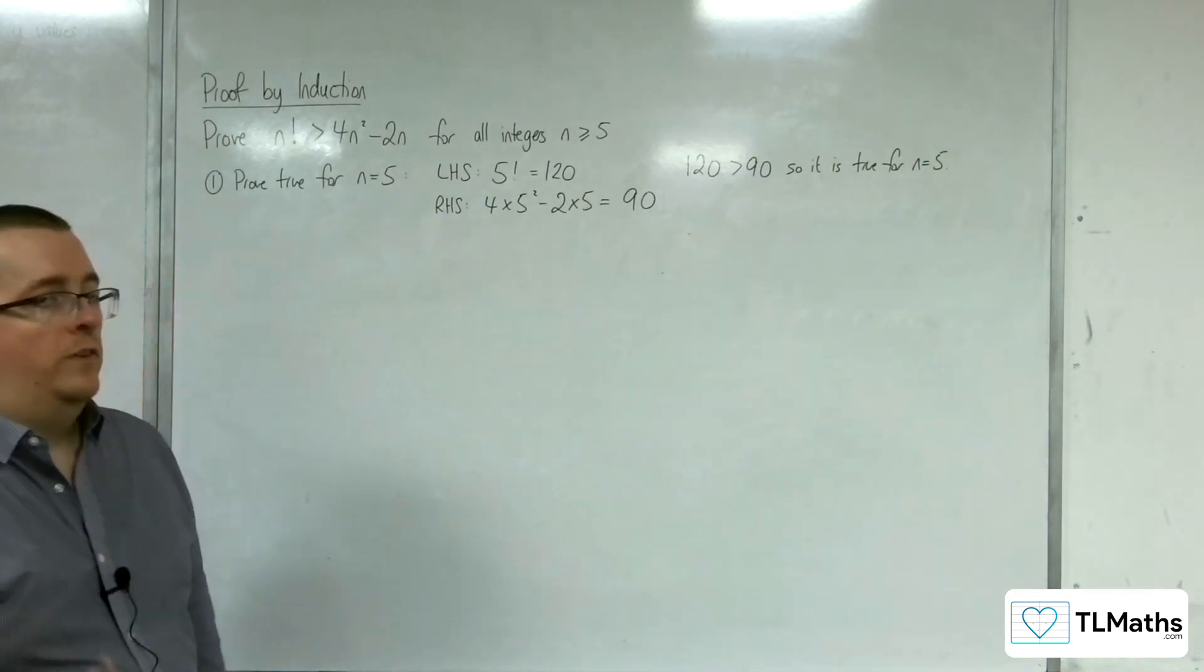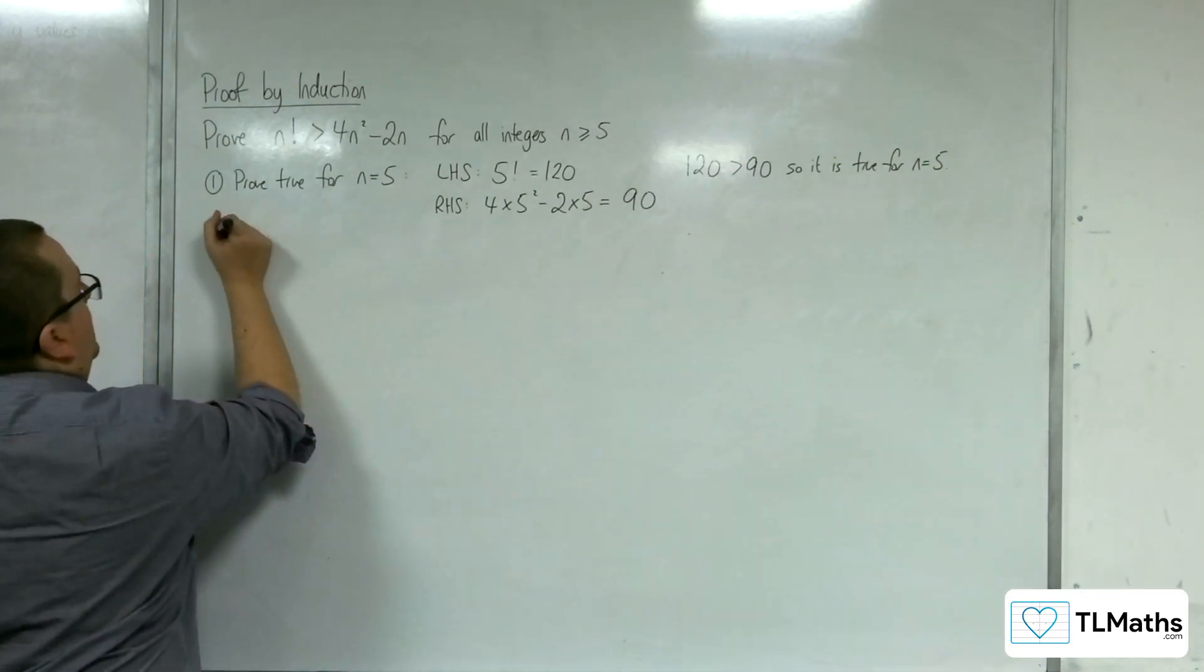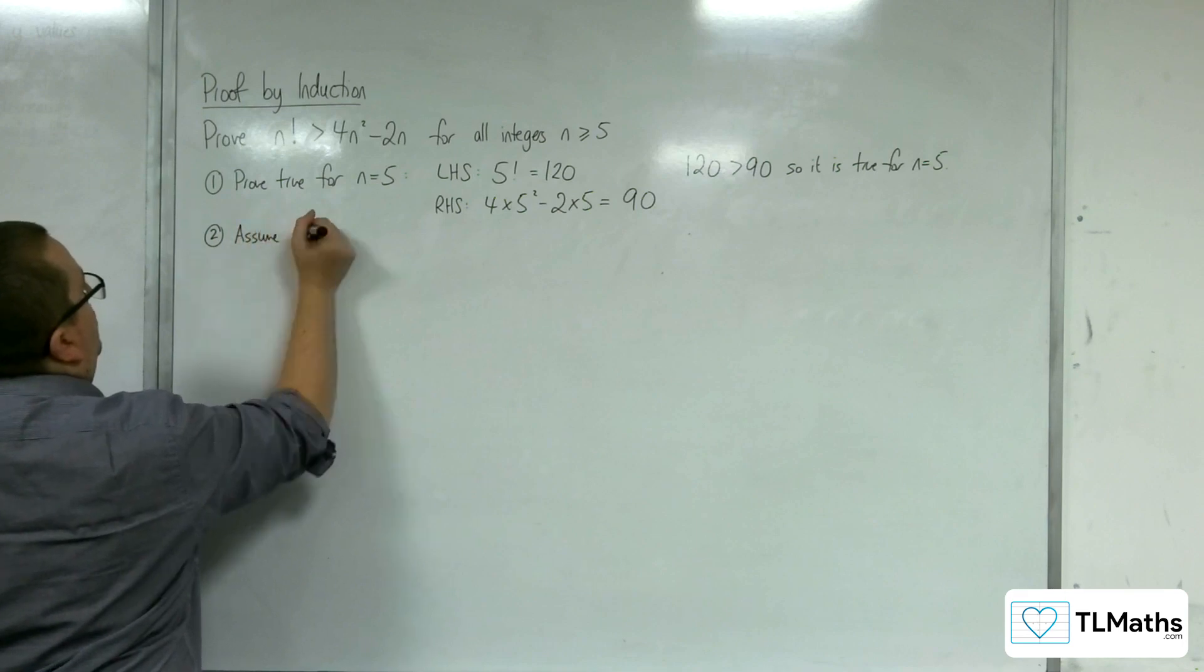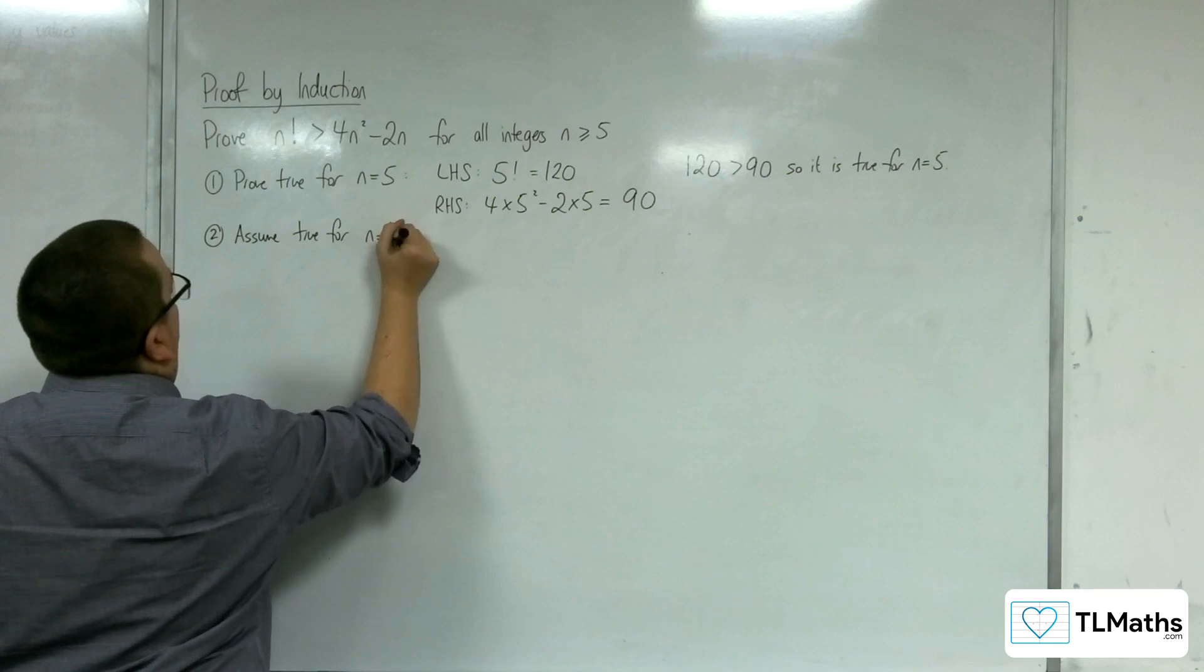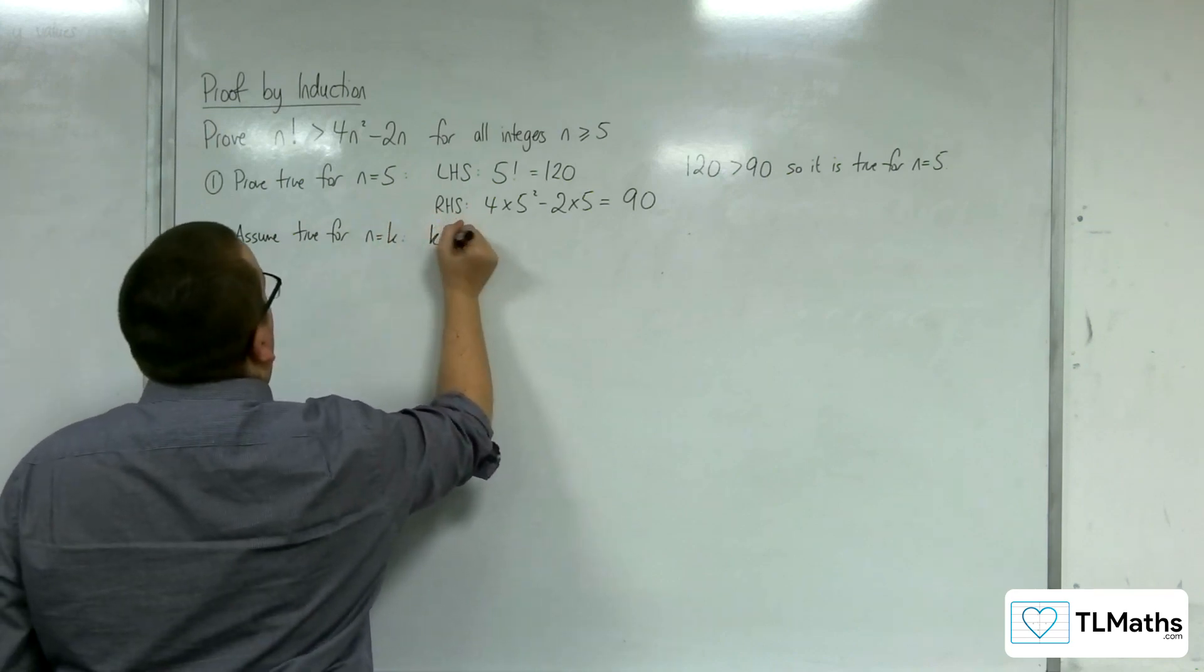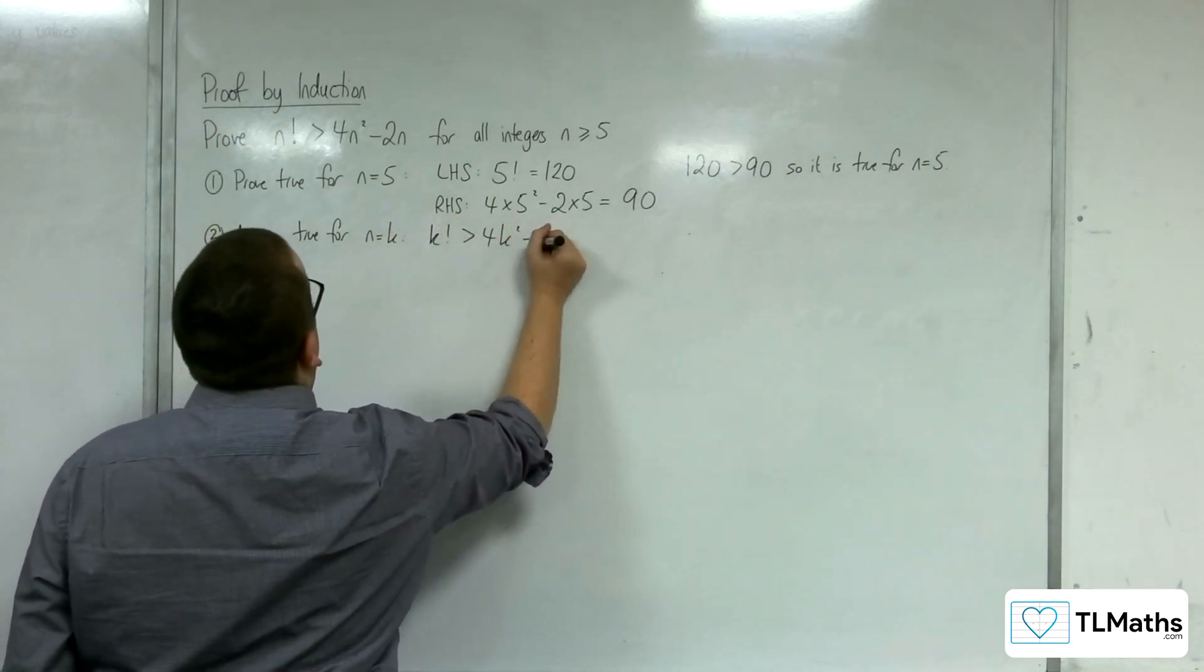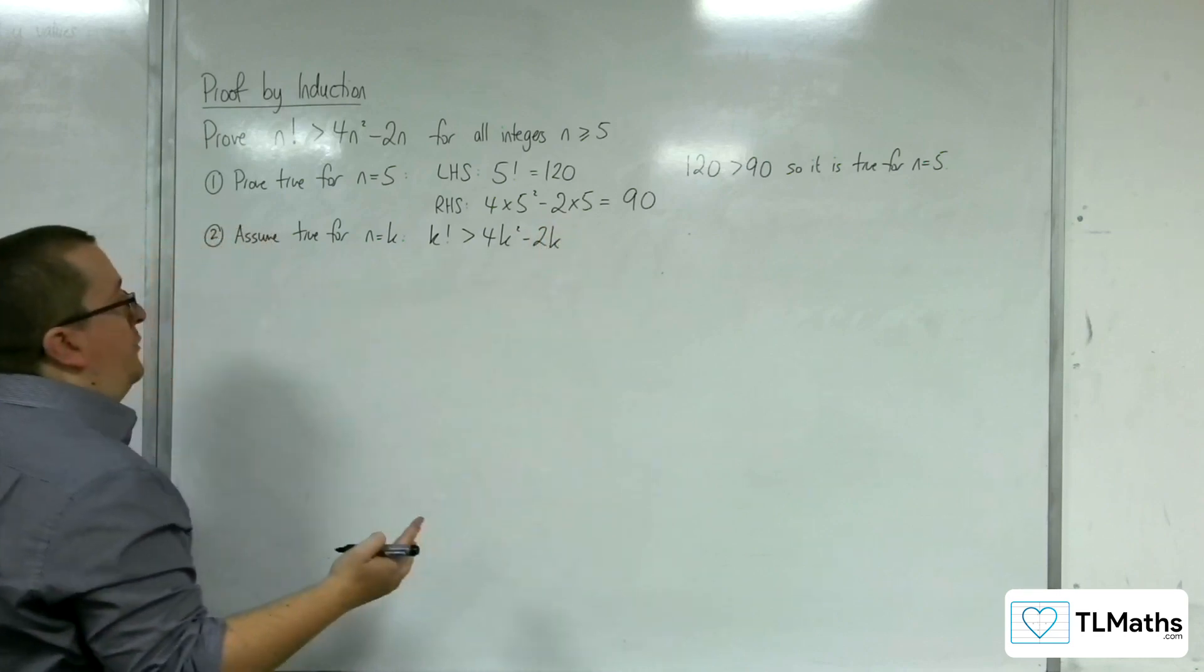OK, so that's that bit sorted. Step 2, we're going to assume that it's true for n equals k. So k factorial is greater than 4k squared minus 2k. That's our assumption.